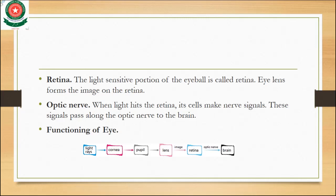The function of light through the eye: first, light rays hit your cornea, then they pass to the pupil, then an image forms between the lens and the retina, and then the optic nerve connects the retina to the brain.